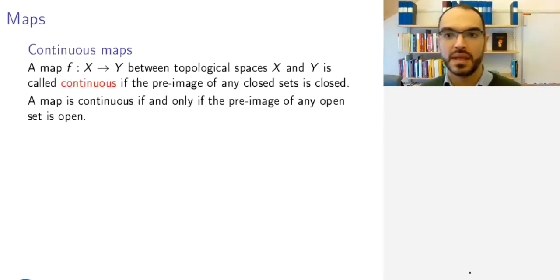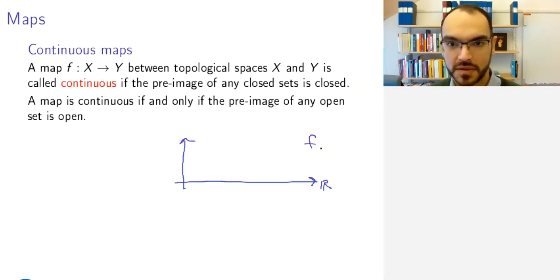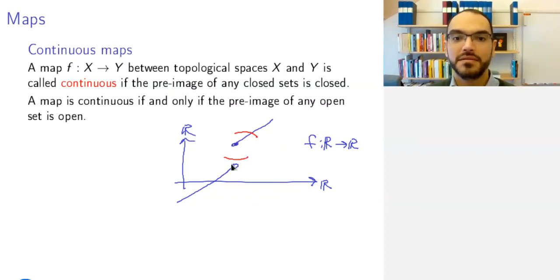Look, for example, at this picture. Consider the following function from R to R whose graph is given in some such fashion. If you look at the pre-image of this open set, this will not be open because the pre-image will be this half-closed set. Maybe that is an image that can make this notion more intuitive. But anyway, this is what the continuous map is.